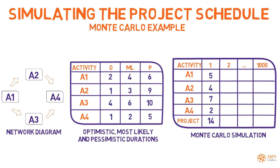On the first iteration, the method returned 5, 4, 7, and 2 weeks as the duration estimates for A1, A2, A3, and A4. As a result, the estimates were then aggregated into an overall project duration of 14. The overall duration was obtained by adding the duration of activities A1, A3, and A4. The duration of activity A2 was disregarded because it was not on the critical path.